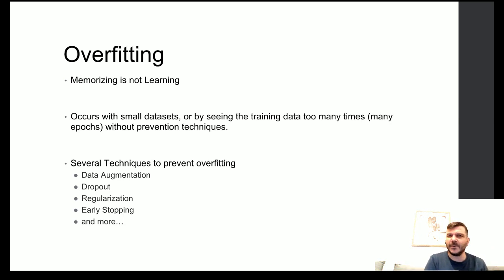That is having too many epochs without taking some of the available techniques to prevent overfitting. Now, there are many techniques and hacks that we have in our arsenal to fight overfitting. Some of these are data augmentation or dropout, regularization, early stopping and few others.